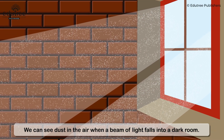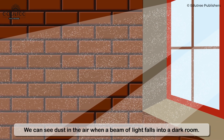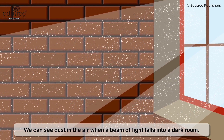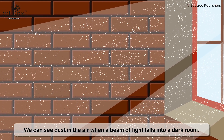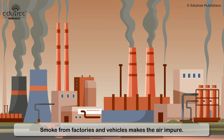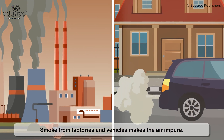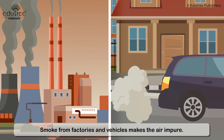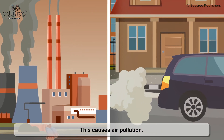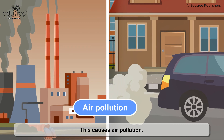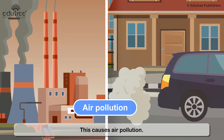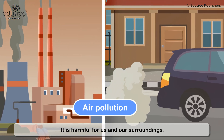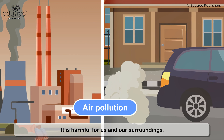We can see dust in the air when a beam of light falls into a dark room. Smoke from factories and vehicles make the air impure. This causes air pollution. It is harmful for us and our surroundings.